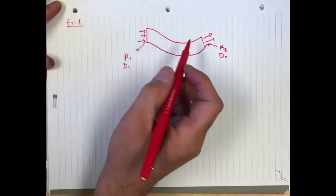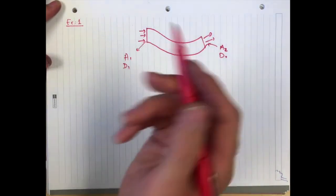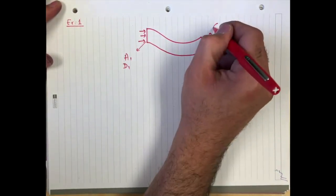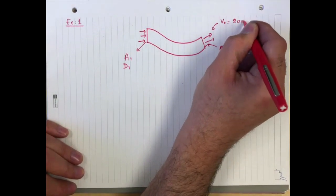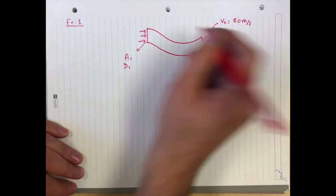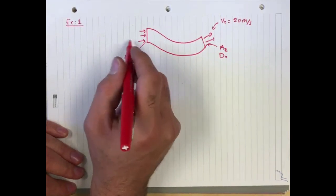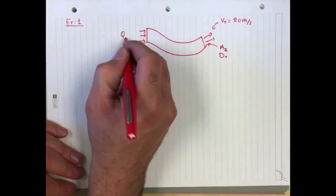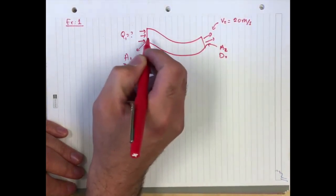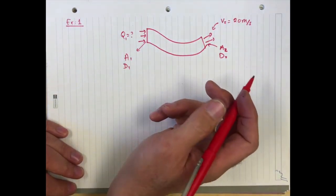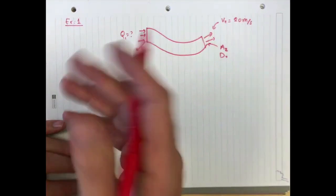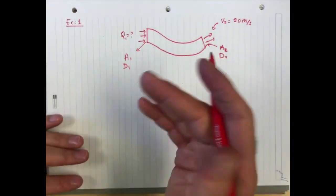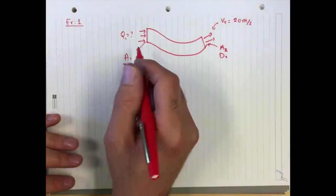And they want to determine, local regulations require that the exit velocity V2 is at least 20 meters per second. And they want to figure out what mass flow rate is required at the inlet over here. So we can simply apply the integral form mass conservation. It's an overkill, I know, but it's just good practice to do so.